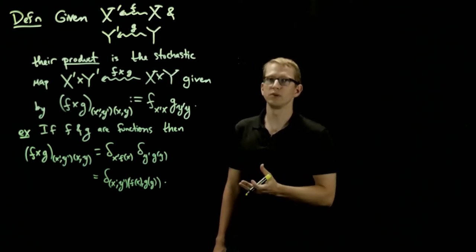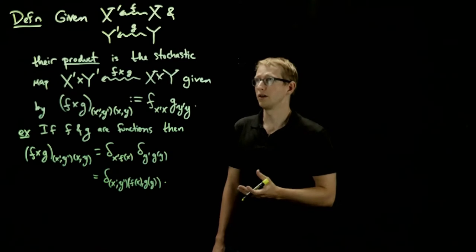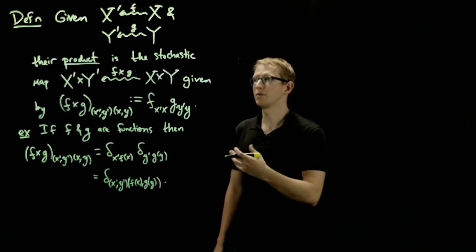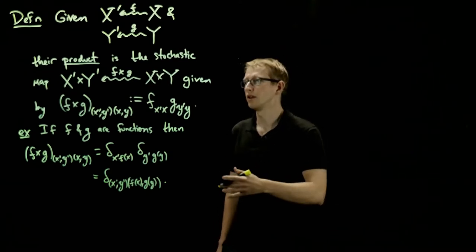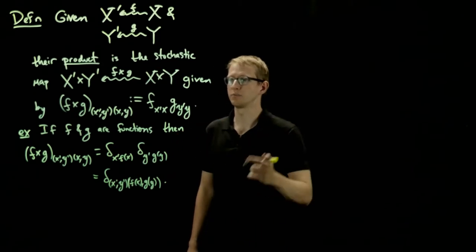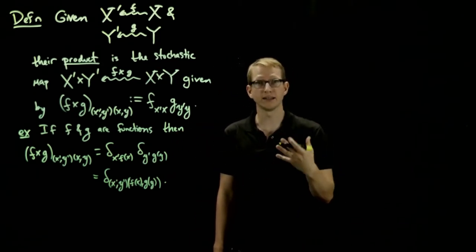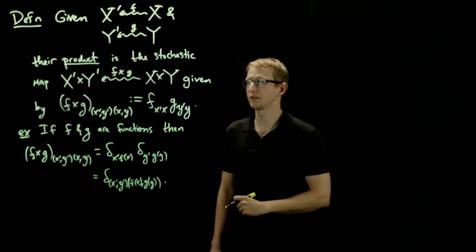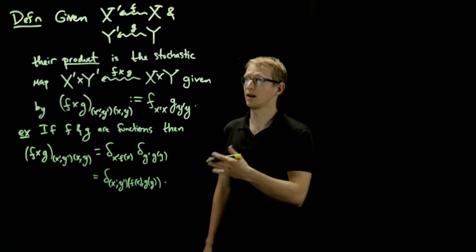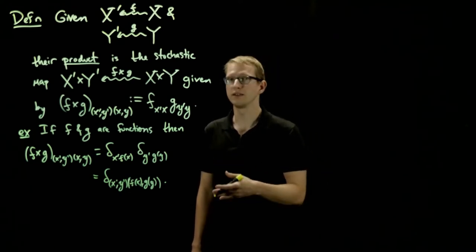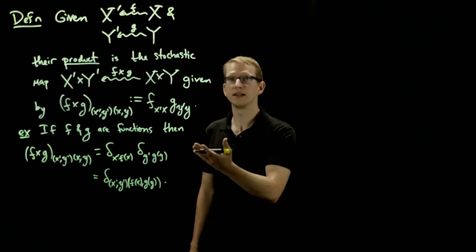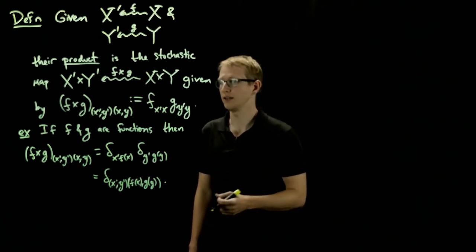And all of the structure that we've defined so far, the idea of the stochastic map, its definition, how it composes, the fact that functions are special cases, in particular the identity function is a special kind of stochastic map. It turns out that composition is associative. The identity is an identity for the composition, for any finite set.